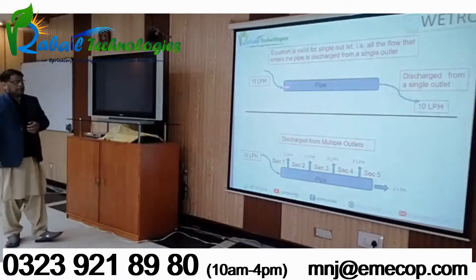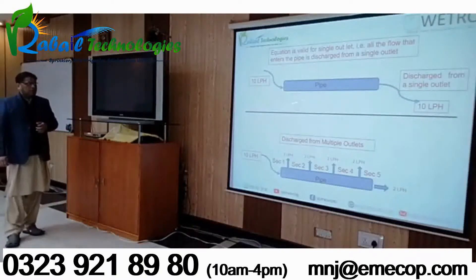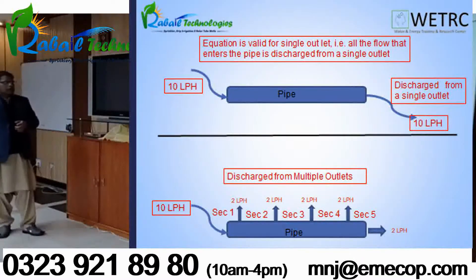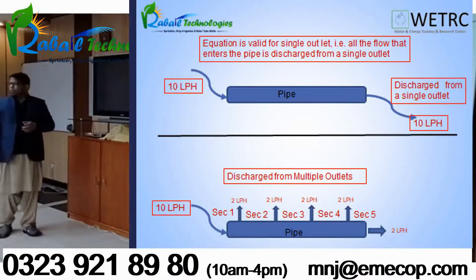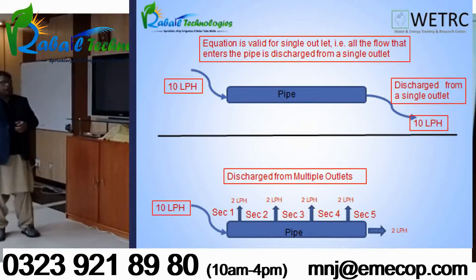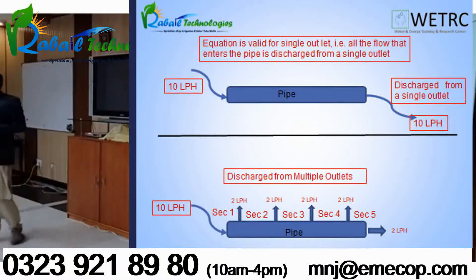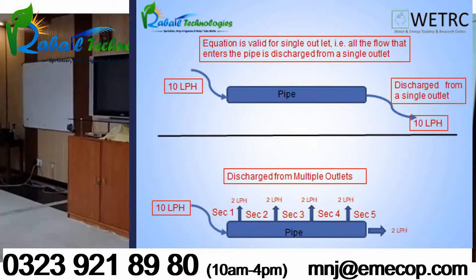Consider a practical situation: a pipe of any given diameter where 10 liters per hour enters the system, travels a certain distance, and the same 10 liters per hour discharges from that pipe. In this first case — single inlet, single outlet — you can use the Hazen-William formula in its basic form.